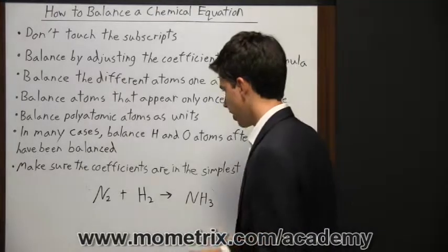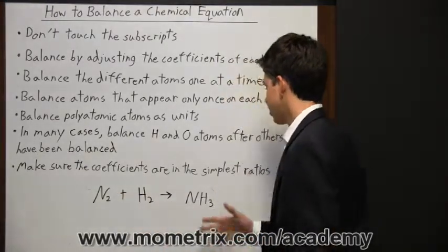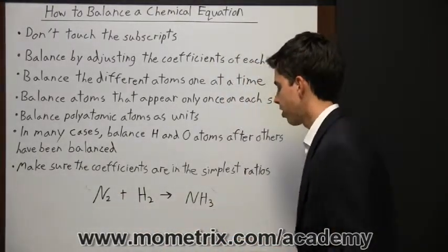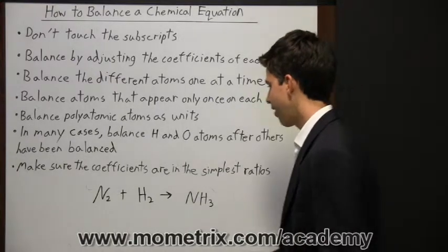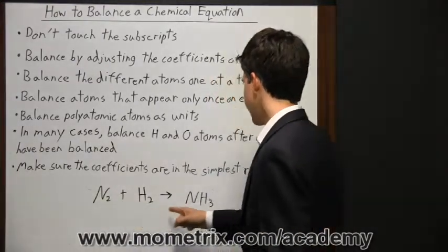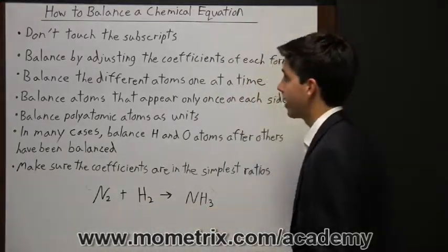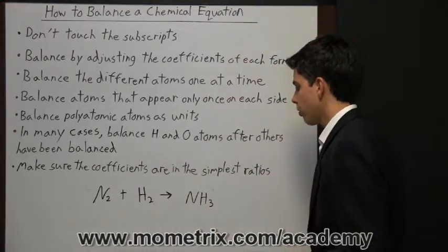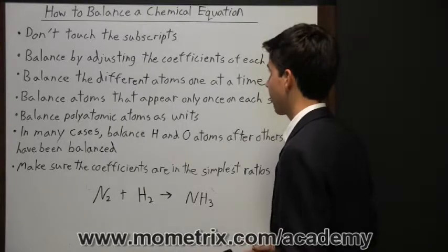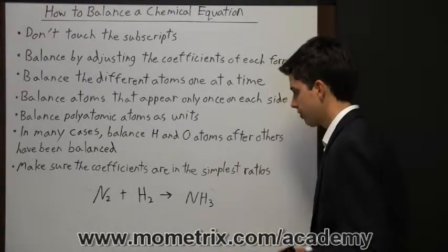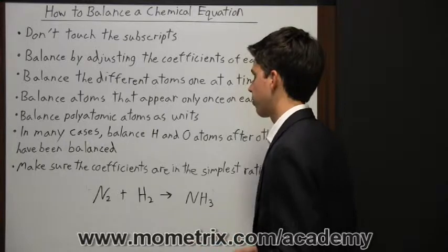So we have this equation right here with nitrogen and hydrogen reacting together to form a product, and it's unbalanced because right now we have two nitrogen atoms here and only one here. We have two hydrogen atoms here and three on the right side. So starting off, we can't touch the subscripts, so instead we're going to have to touch the coefficients. Now we need to figure out which one to start with.